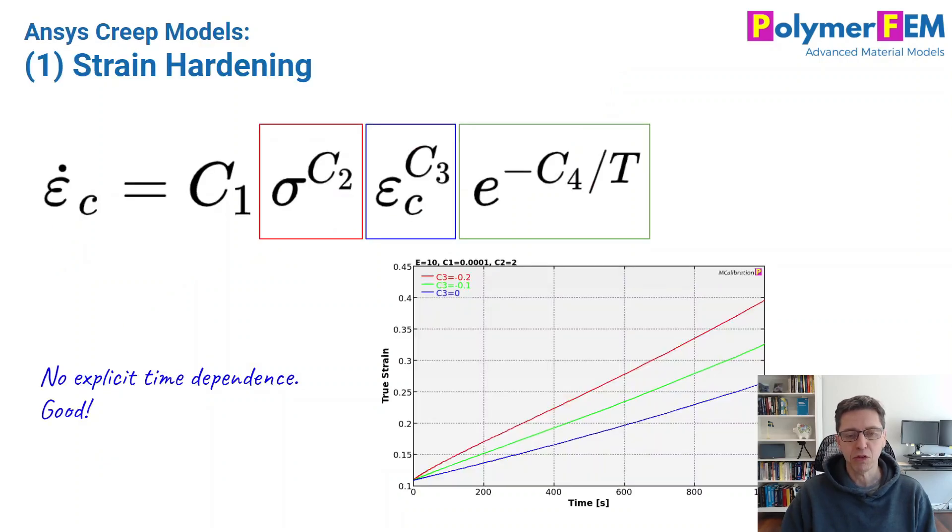Let's go through some of the different models that are available in ANSYS. Here's the first one, the strain hardening model. The creep rate here, the rate of change of the creep strain, is proportional to the stress raised to a power. It's proportional in this case to the strain itself, the creep strain raised to a power, and then a temperature dependence. If you get rid of the creep strain dependence, making C3 equal to zero, then the creep strain rate, as long as the temperature is constant, will be constant. So there will be a constant slope of strain versus time if you plot it that way. That's an easy way to understand how this kind of behavior works.